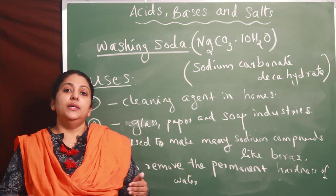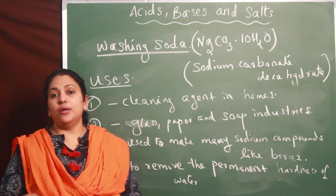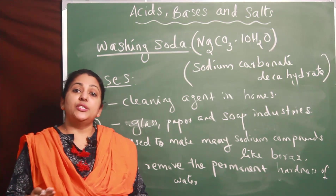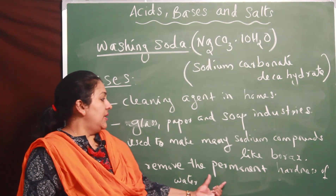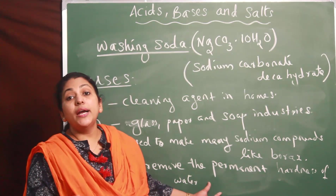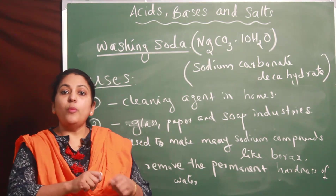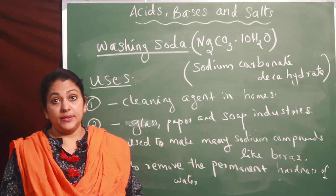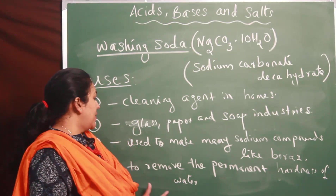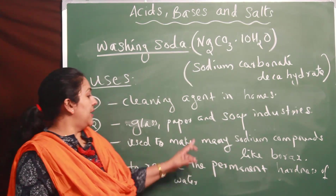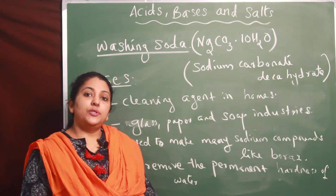When magnesium or calcium salts like magnesium chloride, calcium chloride, magnesium sulfate, calcium sulfate, or calcium bicarbonate dissolve in water, they cause hardness. What happens when water becomes hard? The soap will not make any lather in it - soap will not form properly. To remove this permanent hardness, we can treat hard water with washing soda.